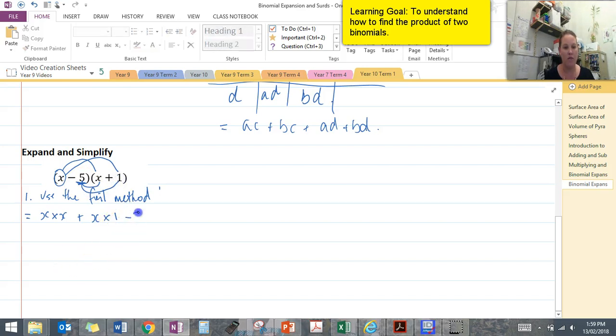So minus 5 times x plus minus 5 times 1. Once we've done that, we can now simplify. So that's going to equal x squared plus x minus 5x minus 5, which then equals x squared plus negative 4x minus 5. And that's our simplified expression.